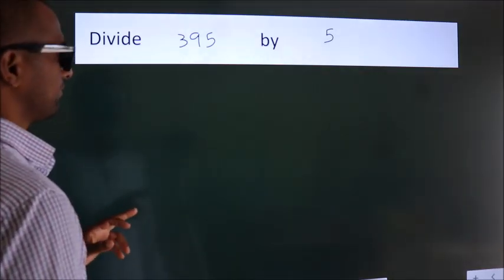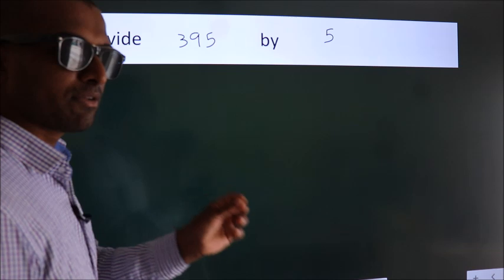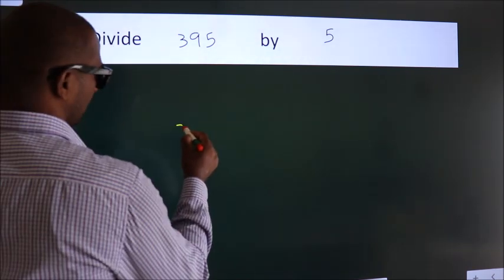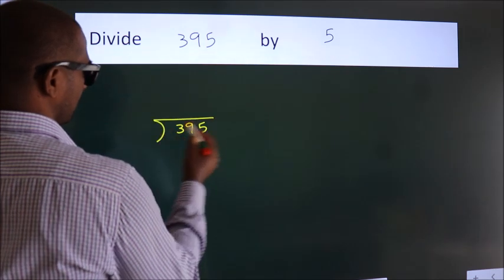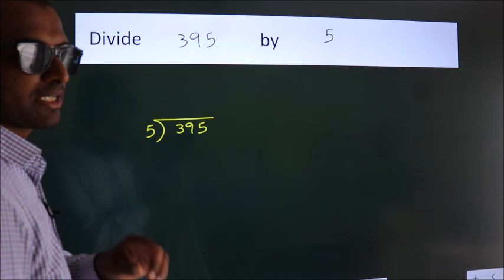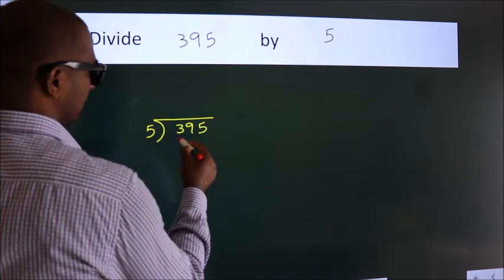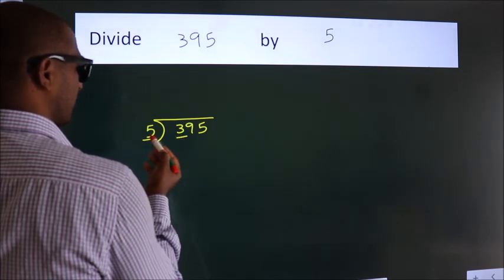Divide 395 by 5. To do this division, we should frame it in this way: 395 here, 5 here. This is your step one. Next, here we have 3. 3 is smaller than 5, so we should take two numbers, 39.